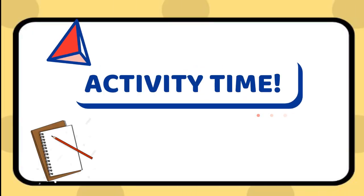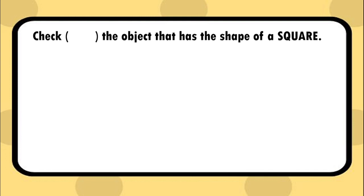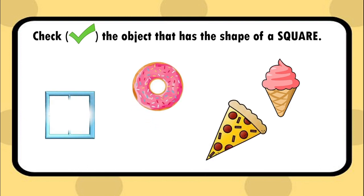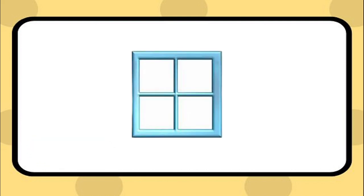Let's have an activity. Check the object that has the shape of a square. Which object has the shape of a square? Is this a shape of a square? Is this a shape of a square? Is this a shape of a square? Yes! The window has the shape of a square. Great job, kids!